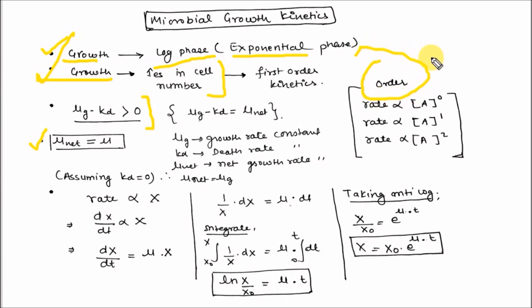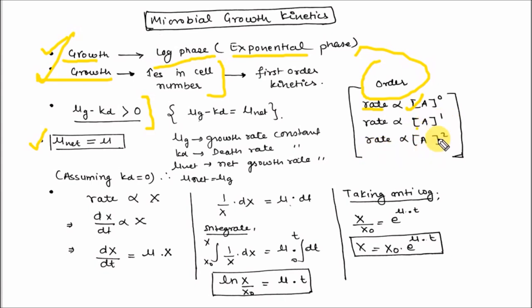What is order? To summarize: when the rate is directly proportional to the zero power of limiting substrate or limiting reagent, then this is zero order. When it is directly proportional to the first power of limiting nutrient, that is first order. When it is directly proportional to the second power of limiting nutrient, then it is second order of reaction. Here it follows the first order of reaction.